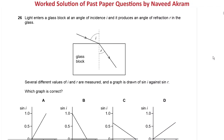Assalamu alaikum, welcome to the video series on topical past paper questions of O-level physics 5054. In this video, we'll discuss past paper questions from Paper 1 of 2019 and 2020 related to the topic of refraction of light and total internal reflection. Before I start, I would like to suggest that to get the most out of this video, you should first try to solve the question yourself.